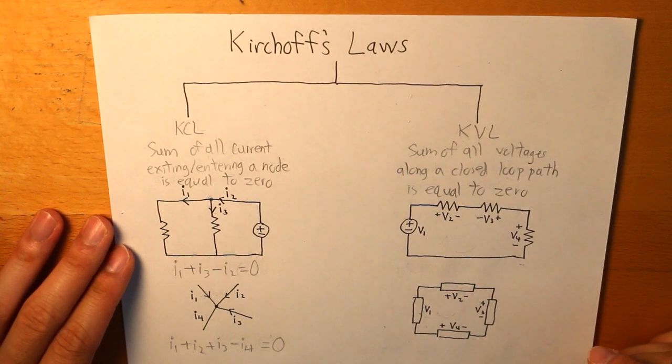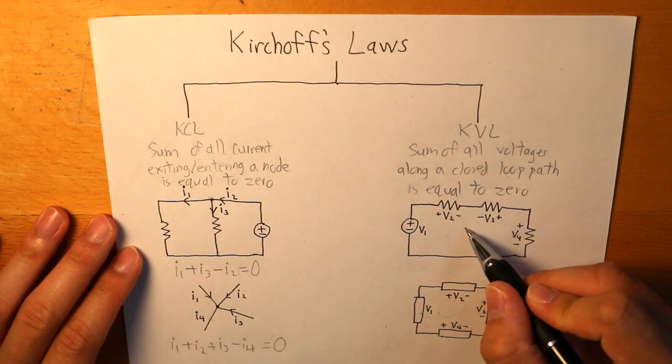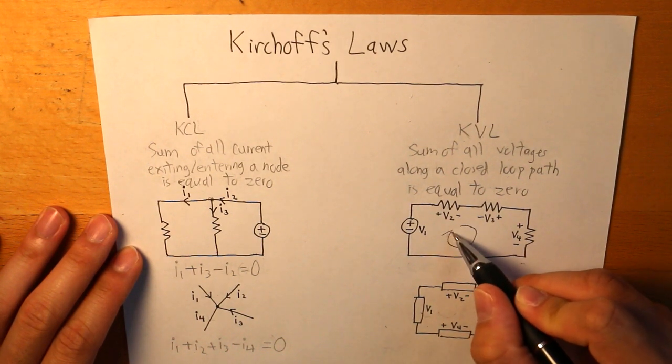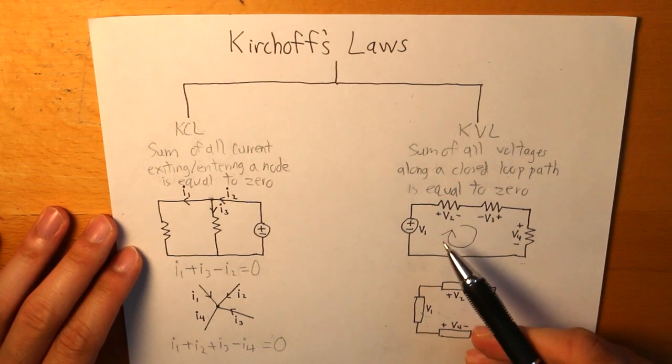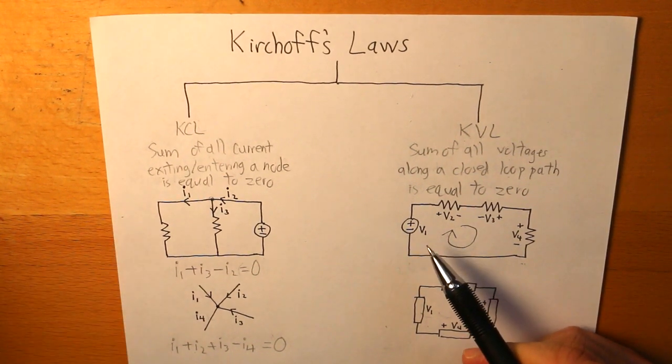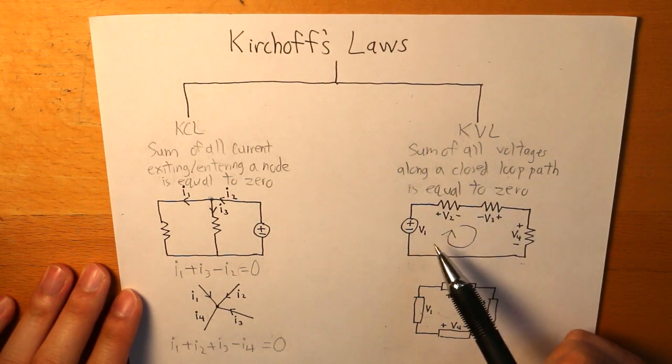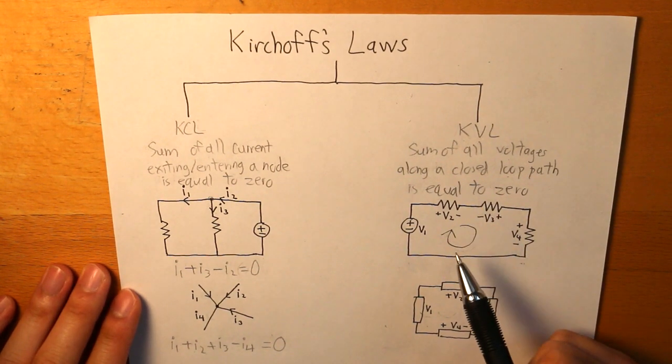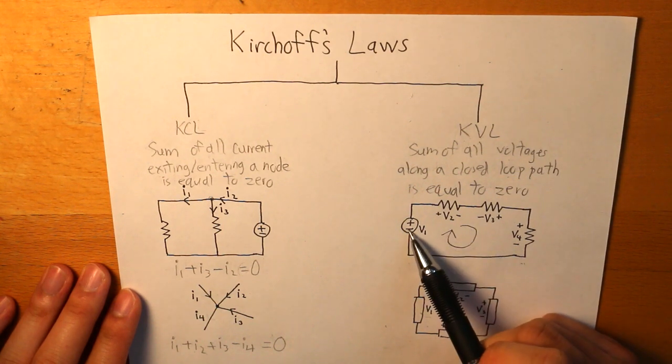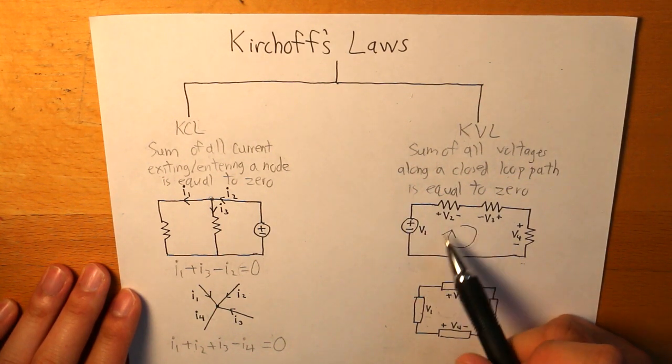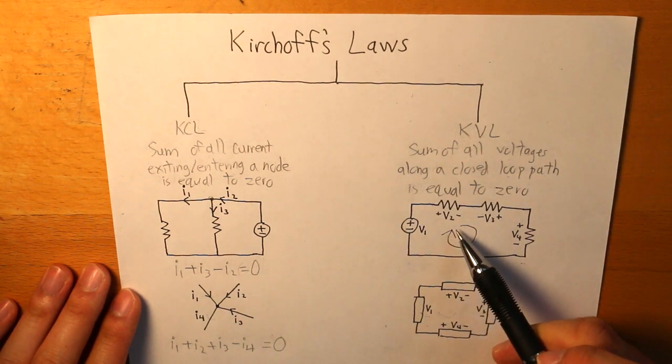So to find KVL, let's draw a loop in this circuit. And by assigning sign convention, what we do is we determine which polarity the path is entering.